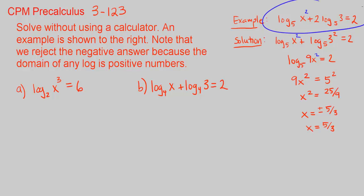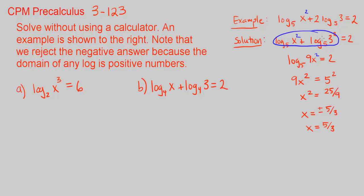So the original example has log base 5 of x squared plus 2 log base 5 of 3 equals 2. These are both log base 5, so we can combine them once we get rid of the 2 as a coefficient. We bring the 2 up to the exponent using the log power law. Then with two log base 5 terms being added together, we can multiply what they're being taken of using the log product law.